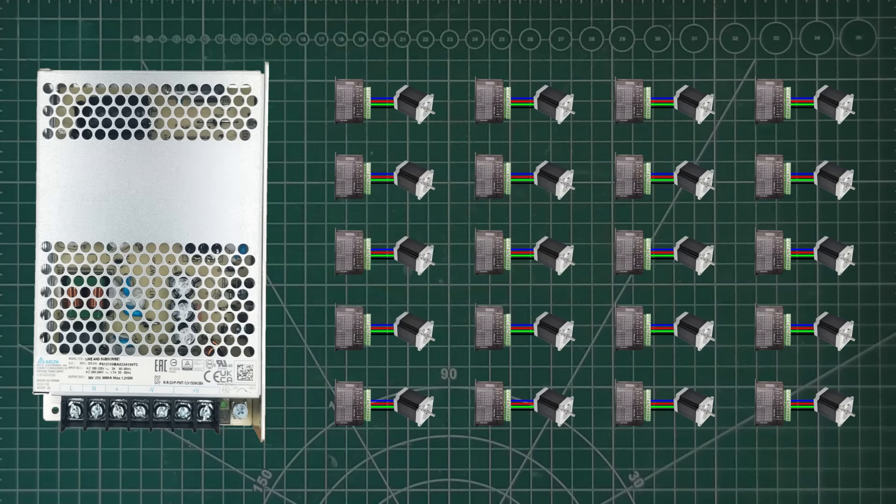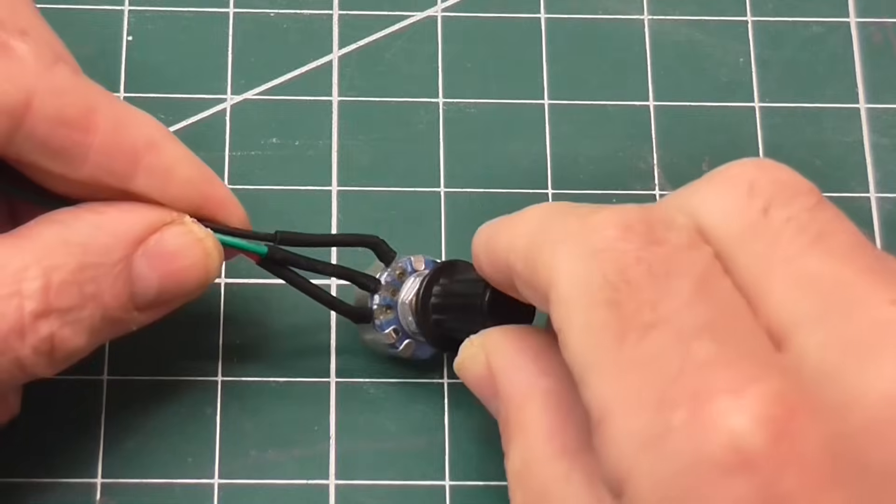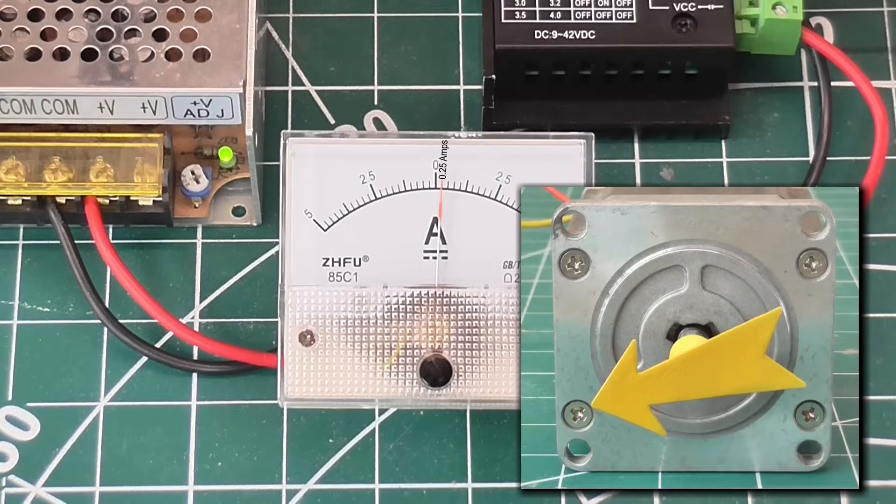In theory, yes, you could connect 20 motors to this 5 amp supply. But only if they never actually moved. As soon as the motor starts stepping, it starts to draw more current from the supply, whether there is a load on the motor or not.